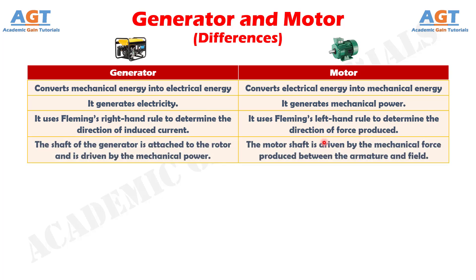Number 4. The shaft of the generator is attached to the rotor and is driven by the mechanical power, whereas the motor shaft is driven by the mechanical force produced between the armature and field.